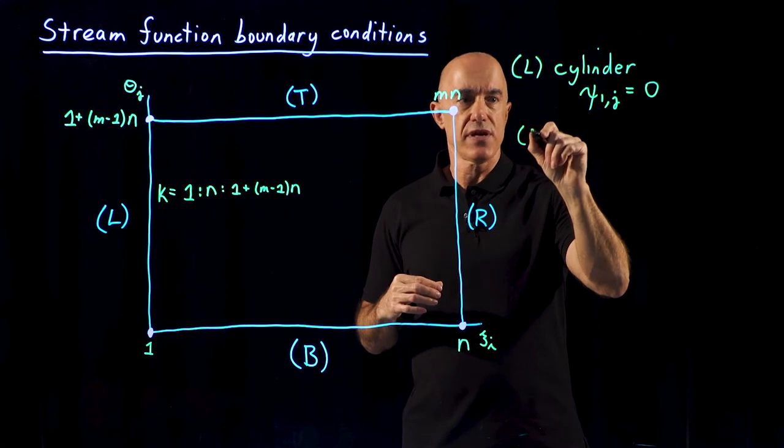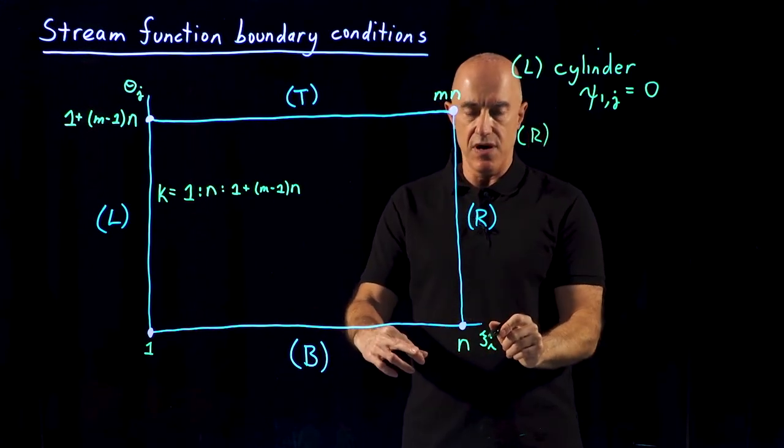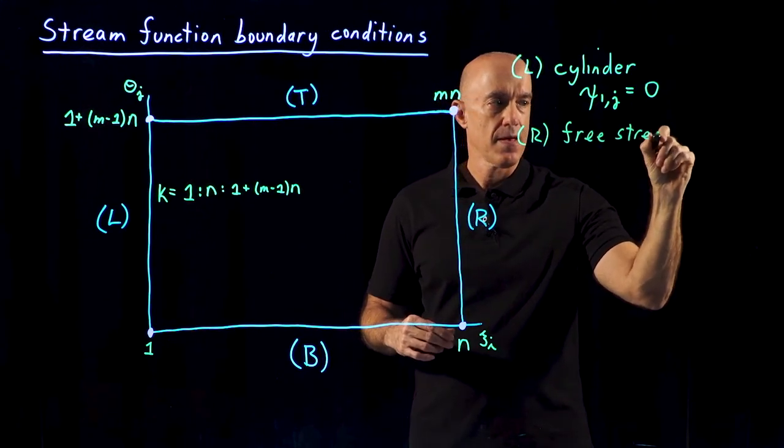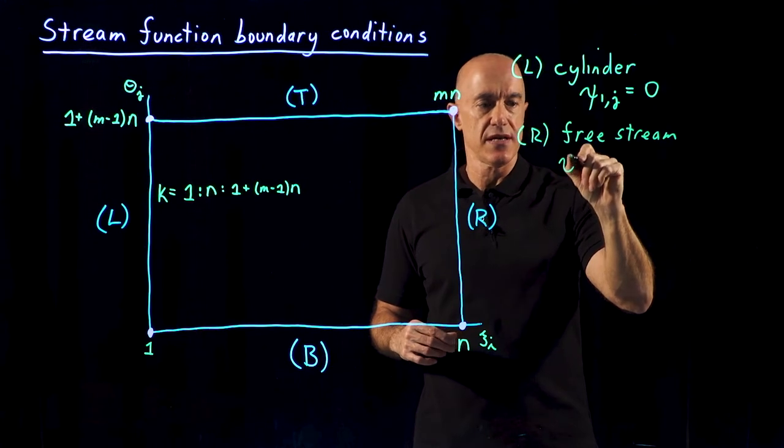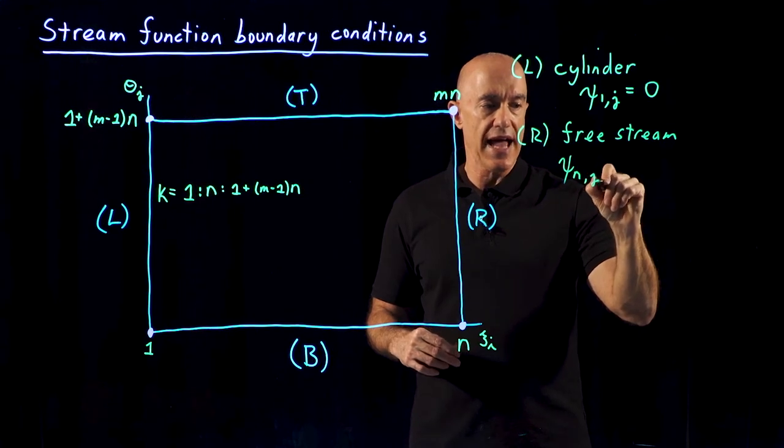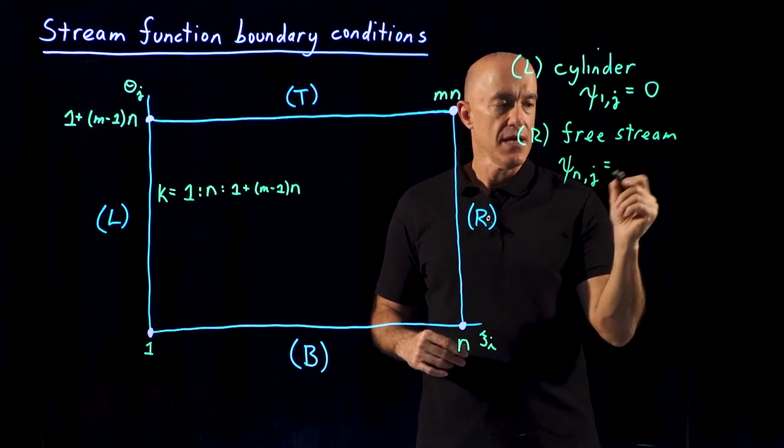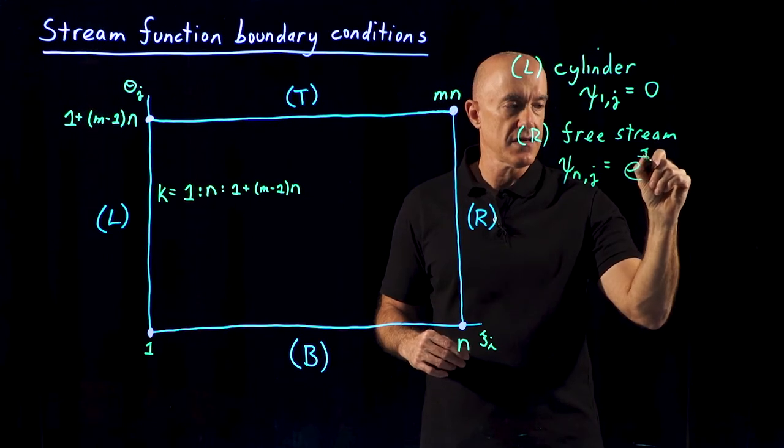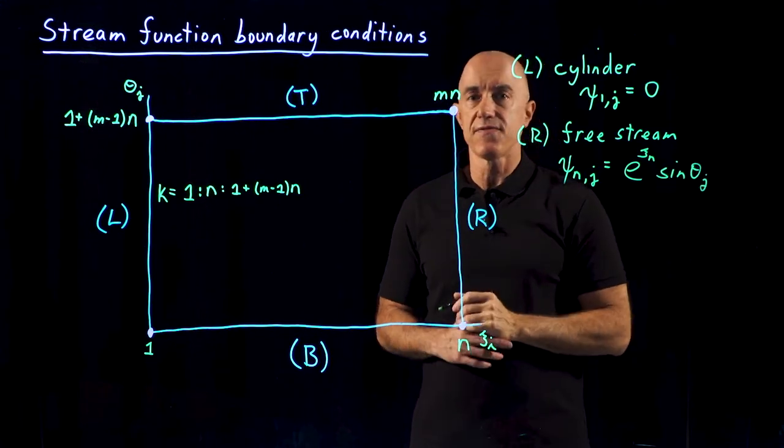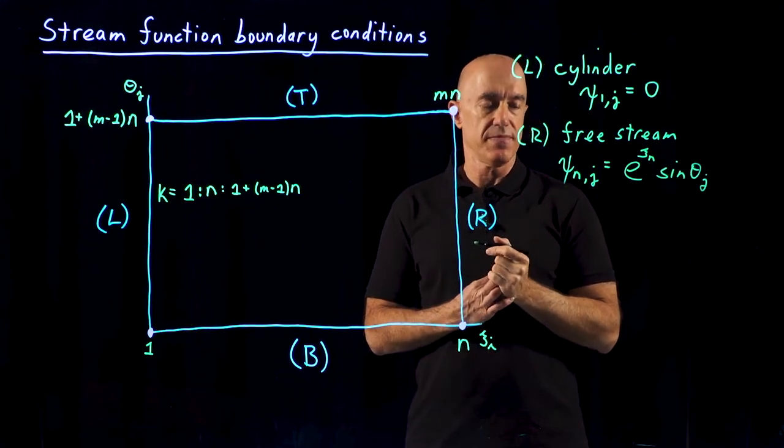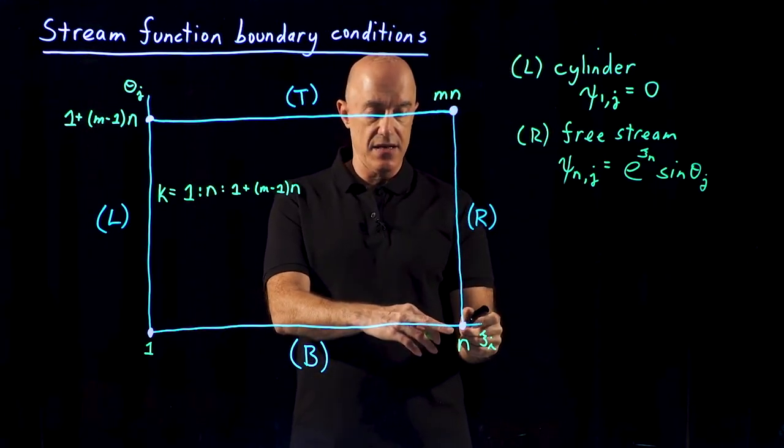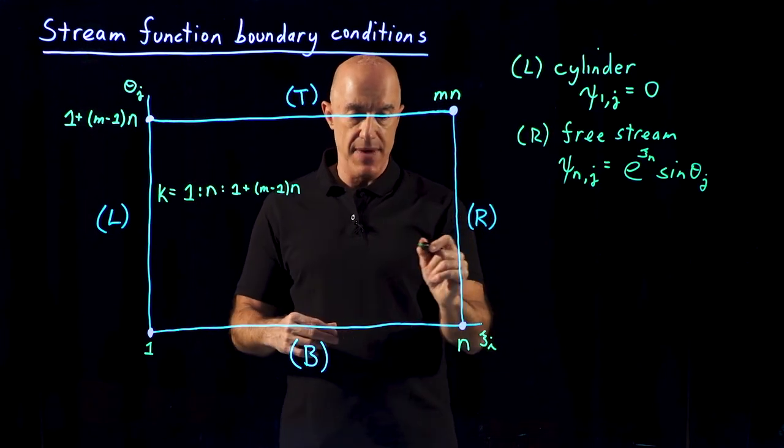For the right boundary, that's the maximum value of Psi. So all the angles is equal to E to the Ks sub N times sine theta J. So that's the free stream boundary condition. What are the values of k here? So we start at N, we increment at N, and we end at MN.